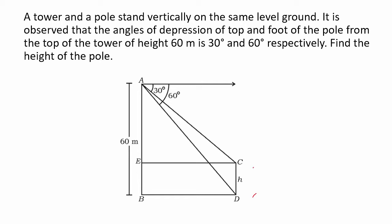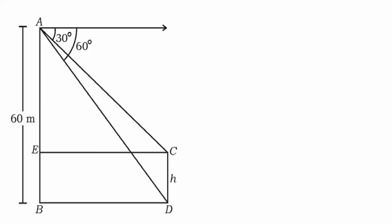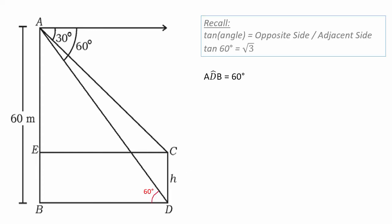It is observed that the angle of depression of the top and foot of the pole from the top of the tower are given. The tower height is 60 meters. We have to find the height of the pole, which is CD, and the height is h. We need to find what h is.